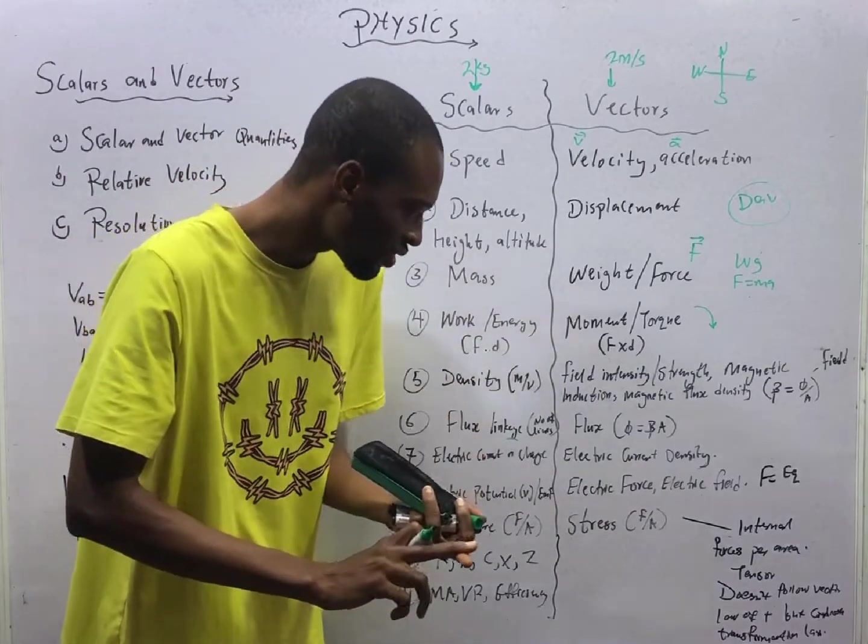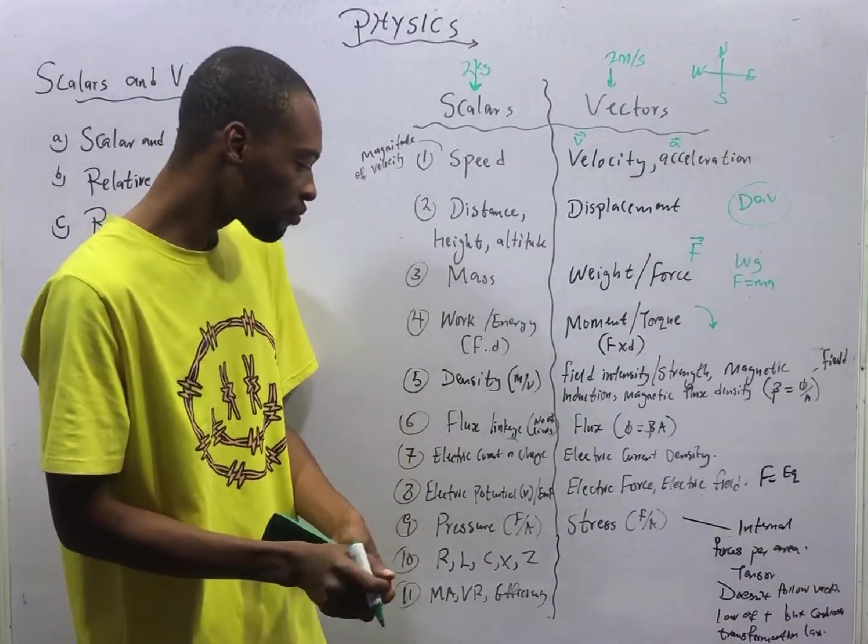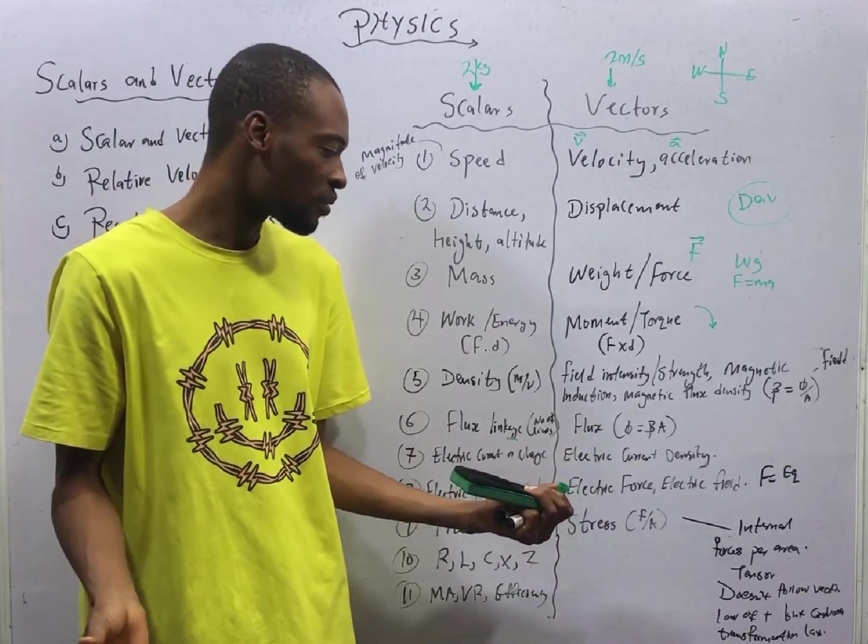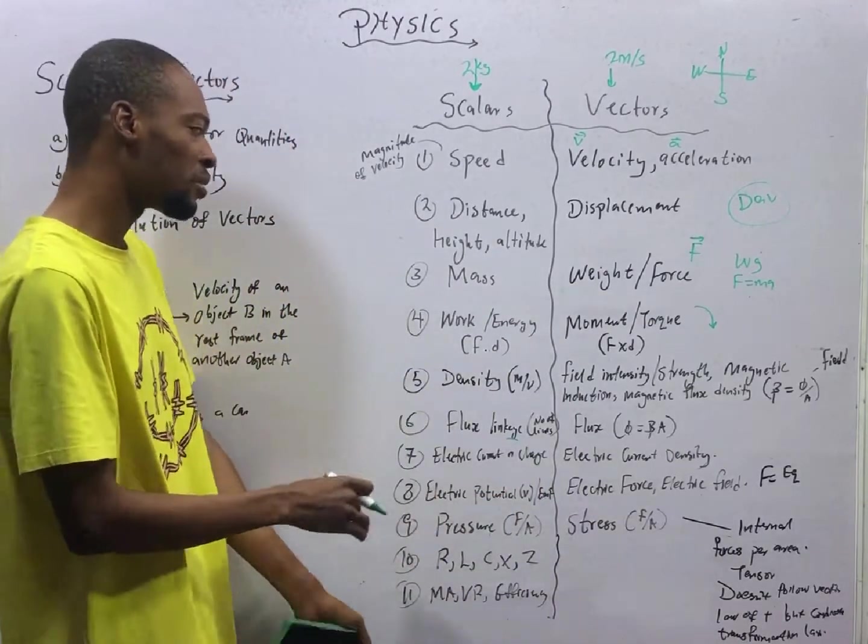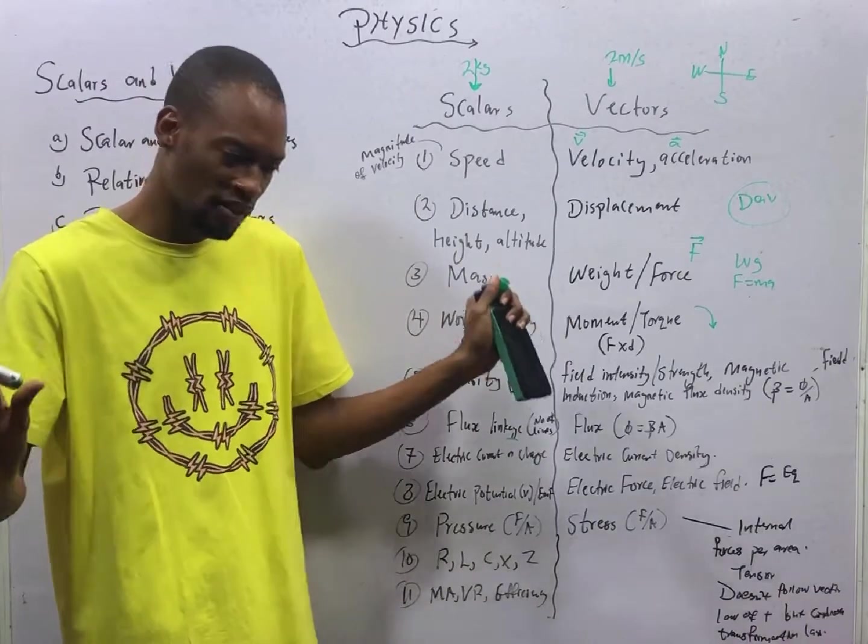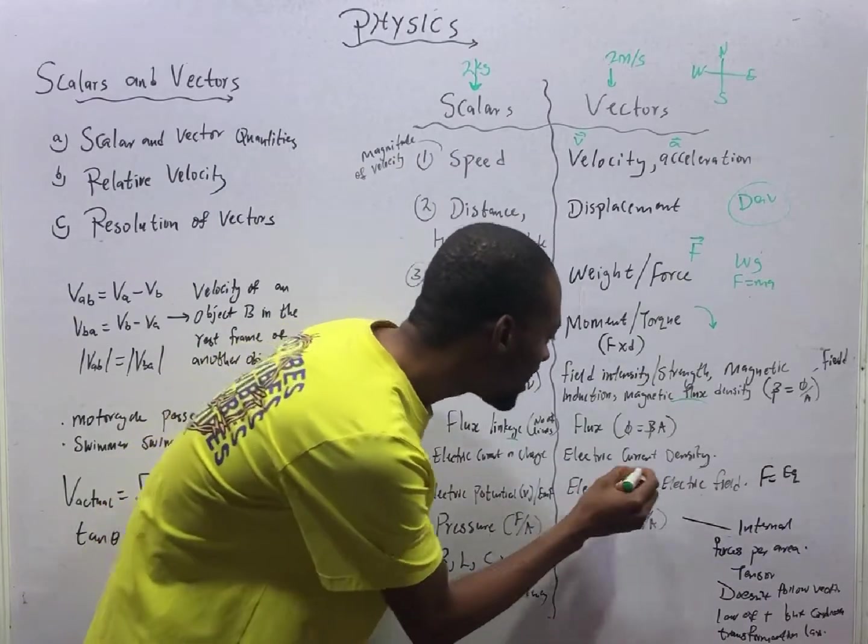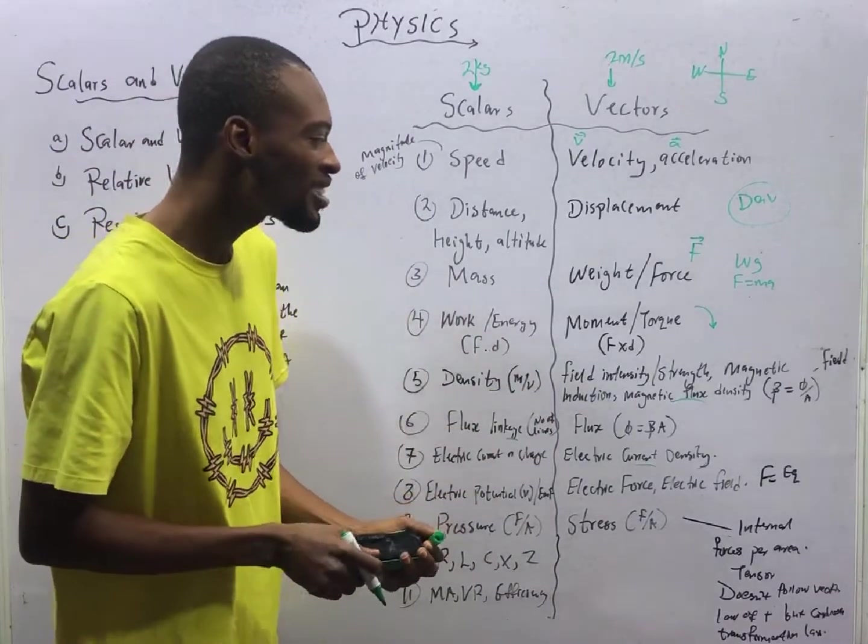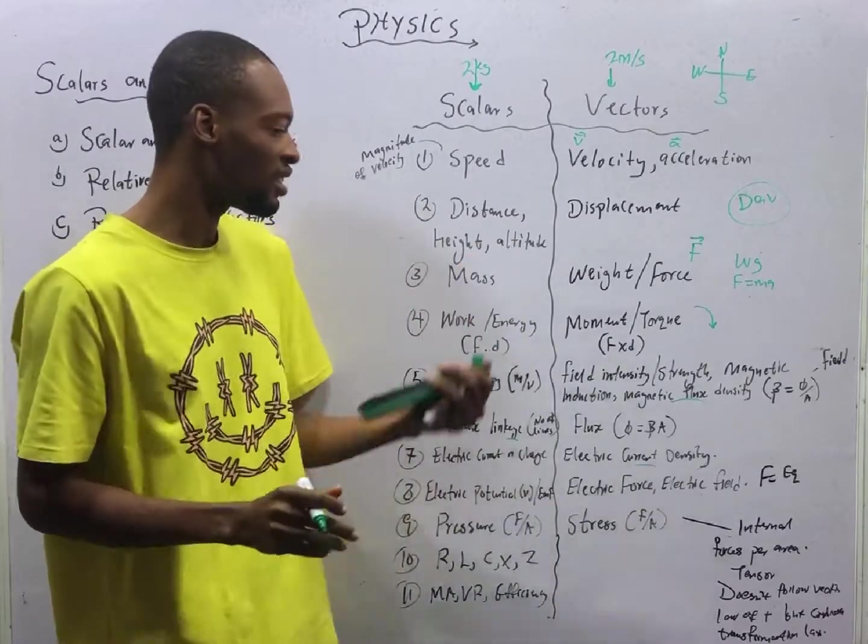Now, electric current or charge is a scalar quantity. Meanwhile, charge density, looking at scalar and vectors, the only density that is scalar is just density. When you mention density, mass over volume is scalar. But by the time you are talking about magnetic field density or electric current density, they become vector. Electric current density, magnetic flux density, they are vector. But when you mention only density, which is mass over volume, it is scalar quantity.